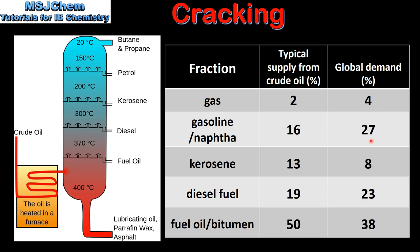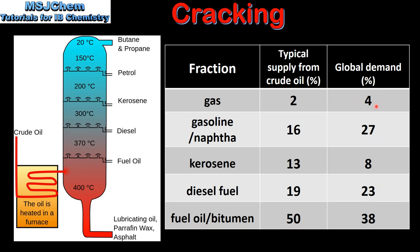As you can see, there is greater global demand for gas, gasoline, naphtha, and diesel fuel. To make up the shortfall between the global demand and the typical supply from crude oil, a process called cracking is used, in which longer chain hydrocarbons are broken up into shorter chain hydrocarbons.